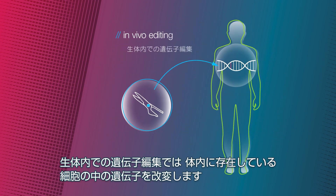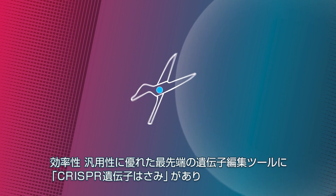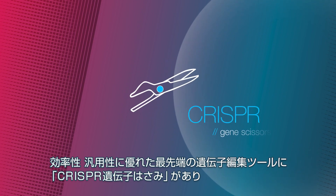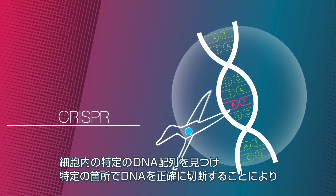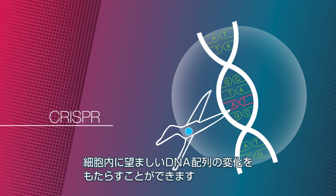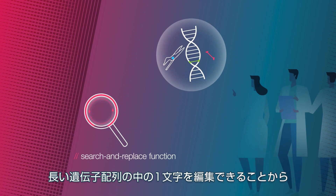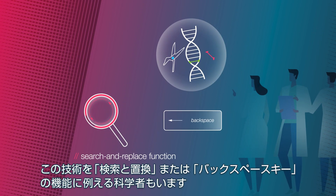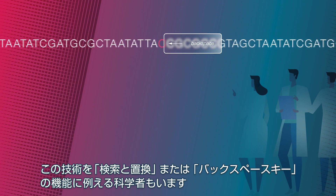In vivo gene editing involves altering the DNA of cells in the patient's body. An efficient and versatile cutting-edge gene editing tool is the CRISPR gene scissors. By finding a specific stretch of DNA inside a cell and then precisely cutting the DNA at a defined location, the desired DNA sequence can be modified in the cell. Researchers often compare this technology to the search and replace function or backspace key on a computer, as even individual letters in a long gene sequence can be edited.